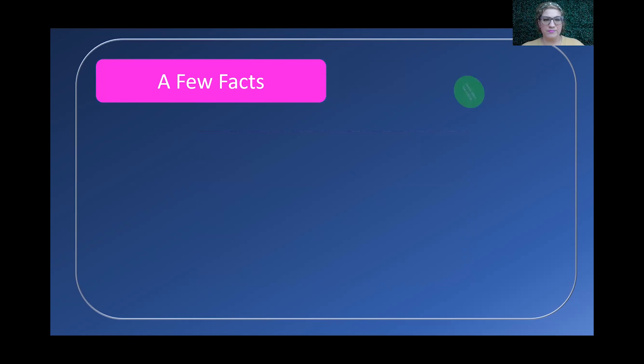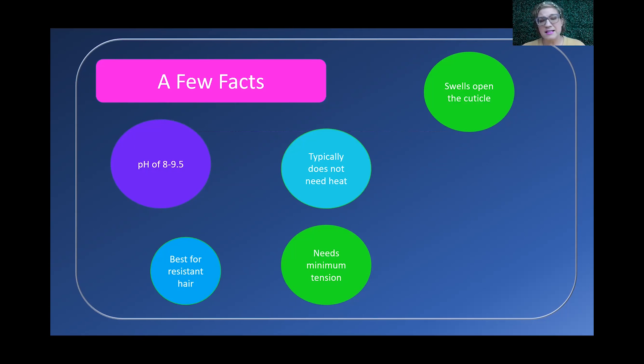A few facts about the alkaline perm. Swells open the cuticle. It's got much stronger pH, which means it has ammonia in it and it really is going to open up the cuticle for you, which also means it's best for resistant hair. We choose alkaline when somebody has coarser hair, when they have virgin hair, when they have super straight hair, hair that really might be difficult to actually change. pH of 8 to 9.5. Main ingredient is ammonia. It needs minimum tension. That push, that strength that comes with an alkaline perm means you don't have to pull real tight. In fact, if you do, you could break the hair. If you have super tight rubber bands on your perm rods, it could actually break the hair. Typically does not need outside heat of any sort. So typically it just goes at room temperature. It processes until it's done and that's it. Main ingredient is ammonium thioglycolate.